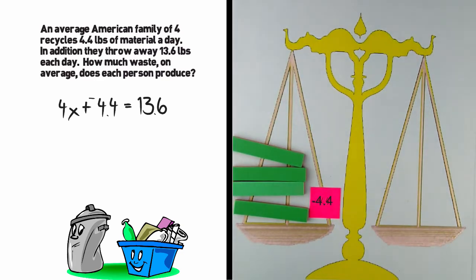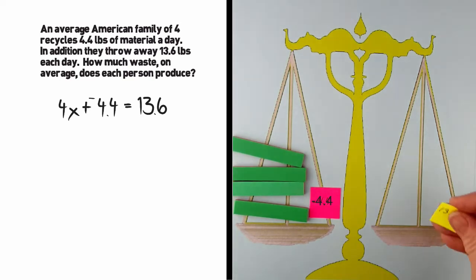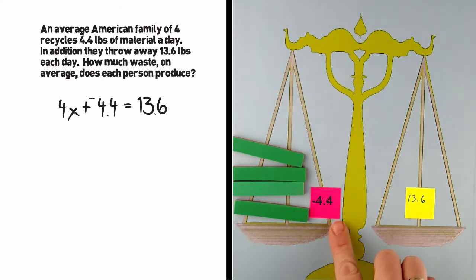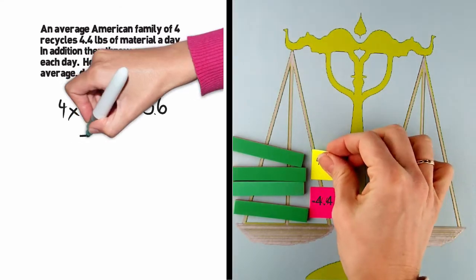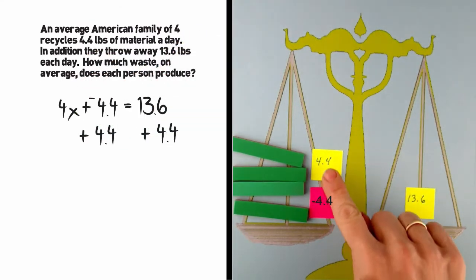So this side of the scale will represent the first part of the equation and the second part of the equation will be represented on the other side of the scale, which should be 13.6. Now we want to get the variable by itself. So to remove negative 4.4, we need to add its opposite, positive 4.4.